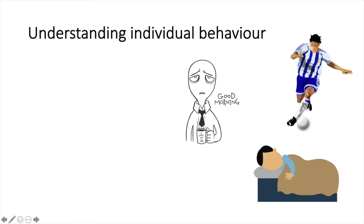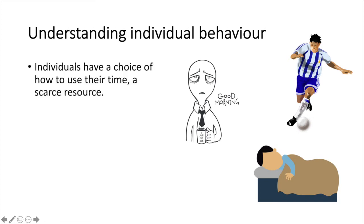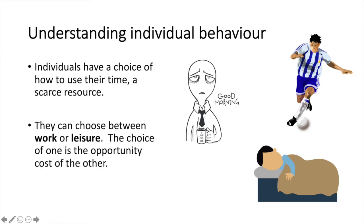To understand the curve, we have to first understand individual behaviour. Individuals have a choice of how to use their time, which is a scarce resource. They can choose between work or leisure, and the choice of one is the opportunity cost of the other. As you work more, you trade off your leisure time, and as you enjoy more leisure time, you give up the opportunity to work.